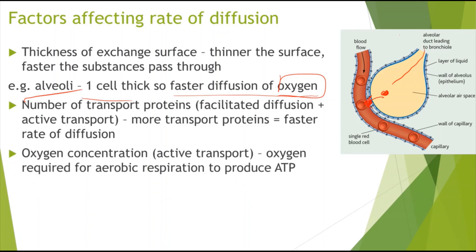Finally, oxygen concentration — this is for active transport only, because oxygen is required for aerobic respiration to produce ATP, and ATP is needed in active transport. So the higher the oxygen concentration, the more ATP can be produced, and therefore the greater the rate of active transport.